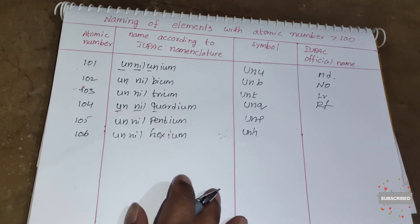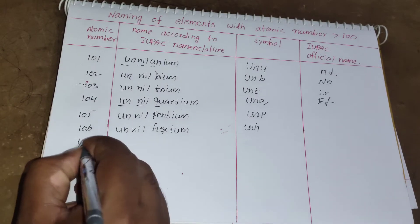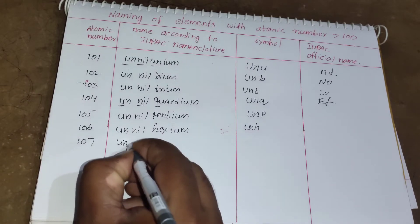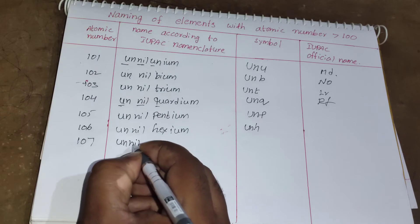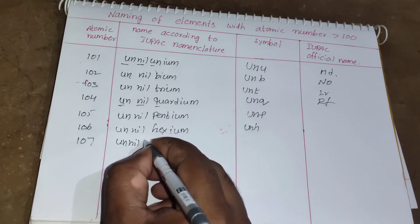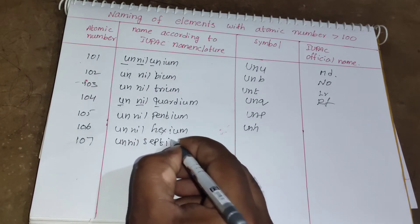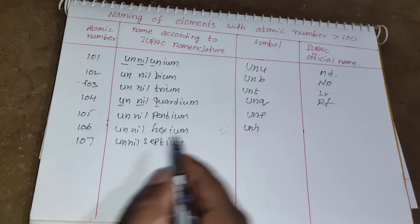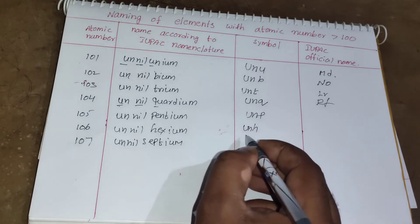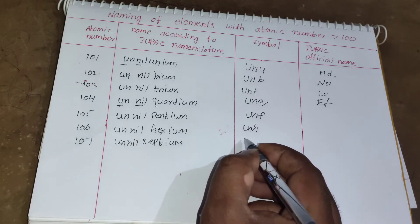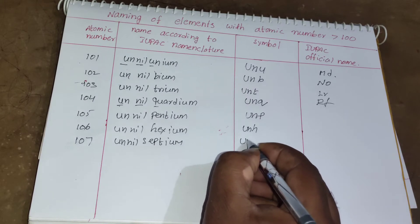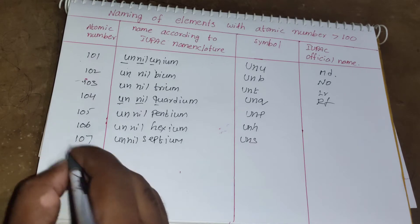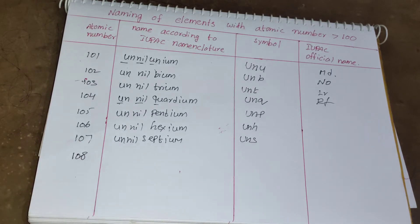For element 107: 1 = un, 0 = nil, 7 = sept, plus '-ium' gives Unnilseptium. The symbol is Uns. For element 108: 1 = un, 0 = nil, 8 = oct, plus '-ium' gives Unniloct­ium. The symbol is Uno.